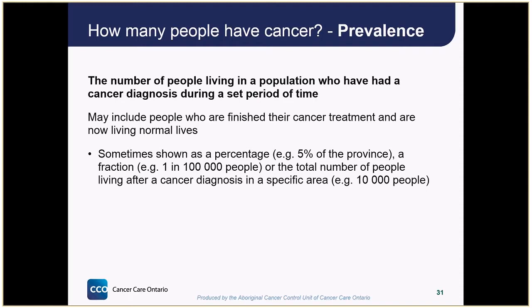Prevalence is sometimes shown as a percentage, such as 5% of the province, or a number out of 100,000. It can also be shown as the number of people living with cancer in an area, which can be useful for planning how many hospital beds or nurses are needed to help people with cancer each year.